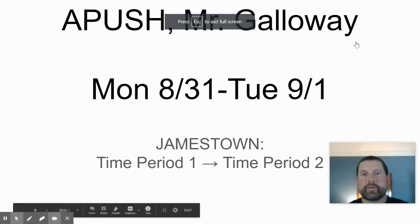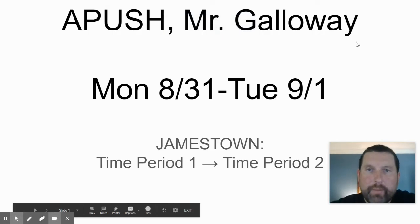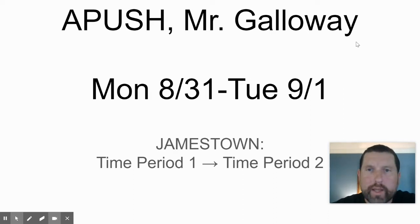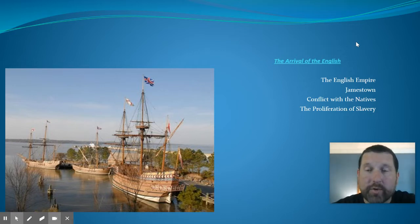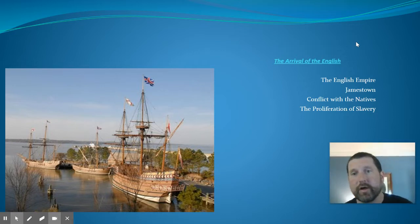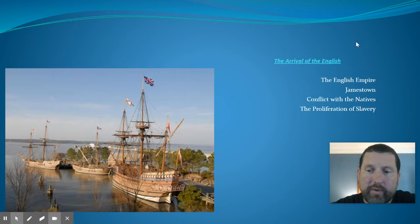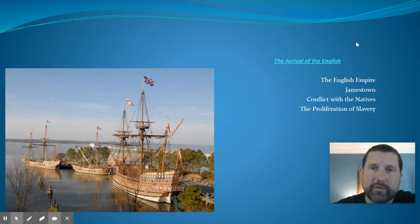All right, APUSH students, let's get ready to roll. We've got class number five today, and we're essentially wrapping up time period one. We're going to get into time period two history, the turning point being Jamestown. We're going to be talking about the arrival of the English, and one of our main topics today is going to be the proliferation of slavery — still in its early ages.